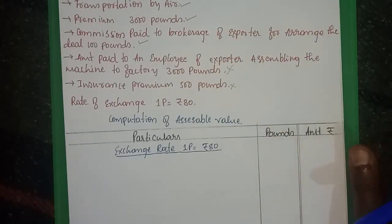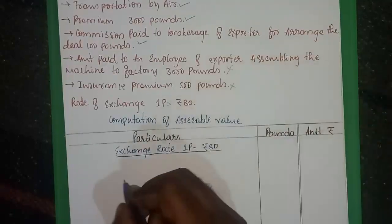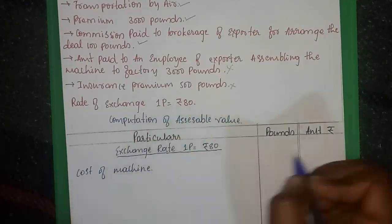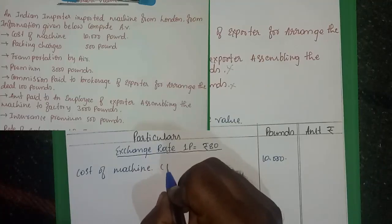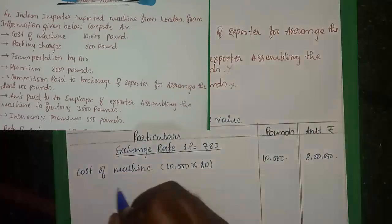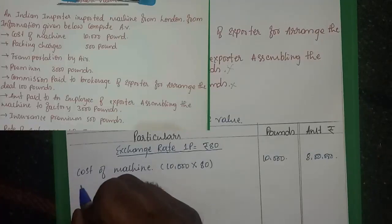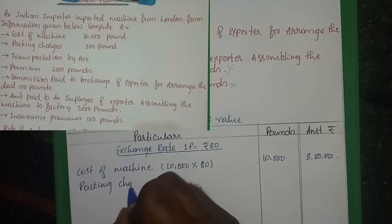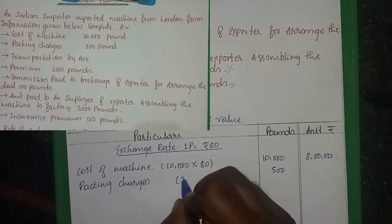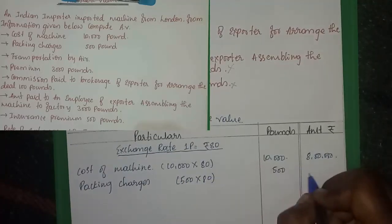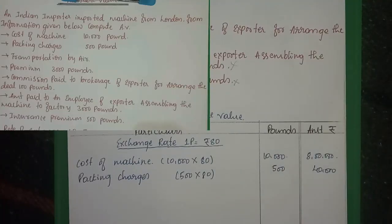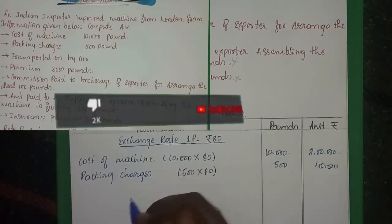First, find the assessable value. Cost of machine: 10,000 pounds. Convert to Indian rupees: 10,000 × 80 = 8,00,000 rupees. Next, packing charges: 500 pounds. Convert: 500 × 80 = 40,000 rupees. Note that transportation by air and FOB are to be handled separately.